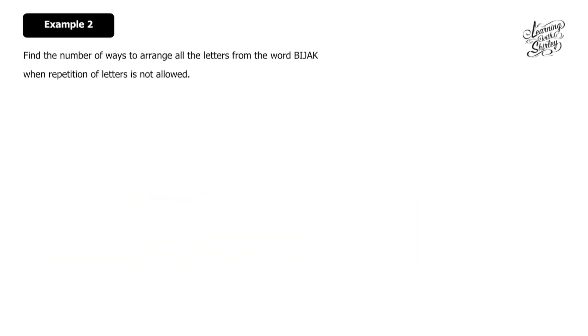Let's look at Example 2. Find the number of ways to arrange all the letters from the word BIJAK when repetition of letters is not allowed. BIJAK has five letters: B-I-J-A-K. So the number of ways is n factorial, which is 5! = 5 × 4 × 3 × 2 × 1 = 120 ways.